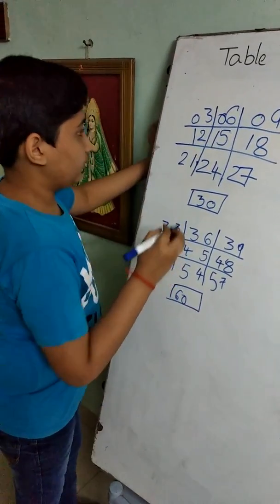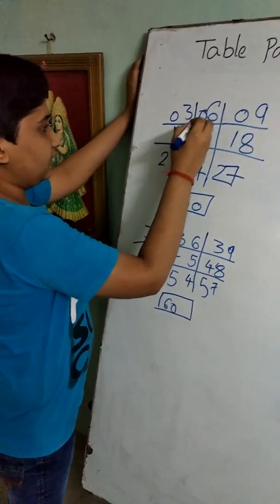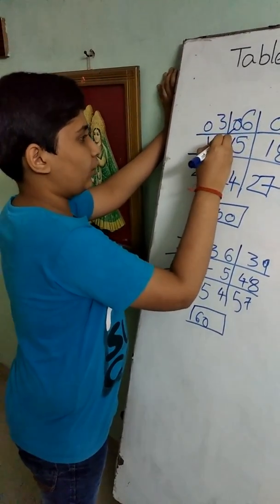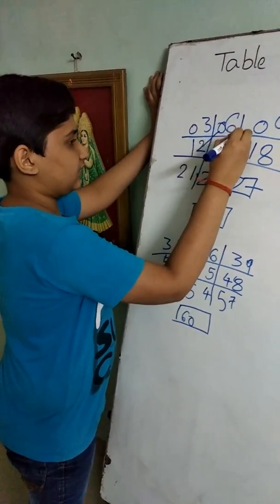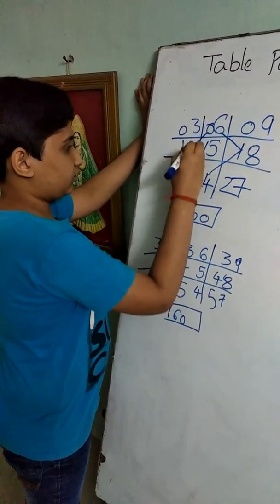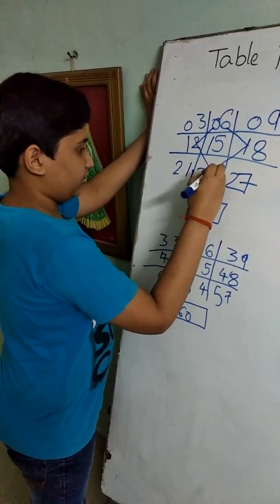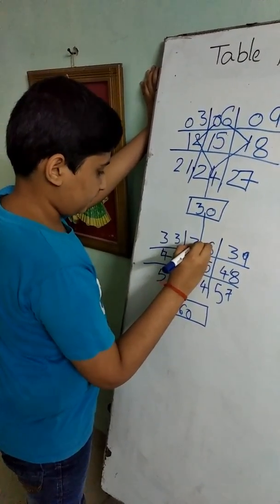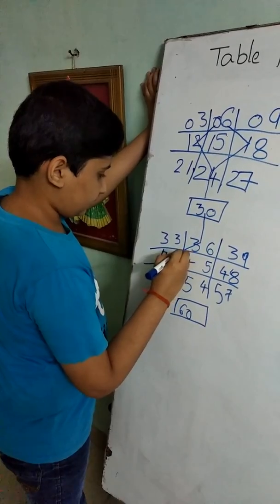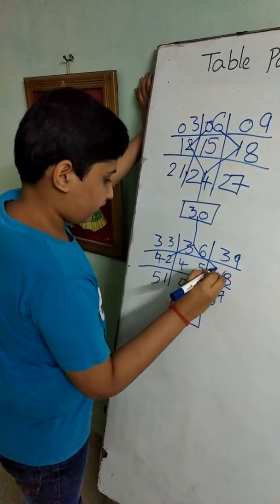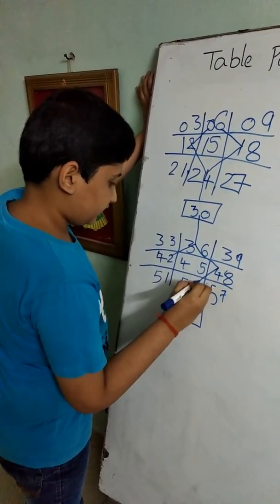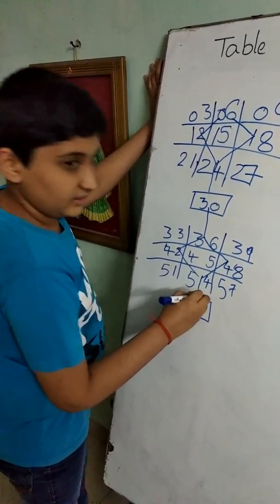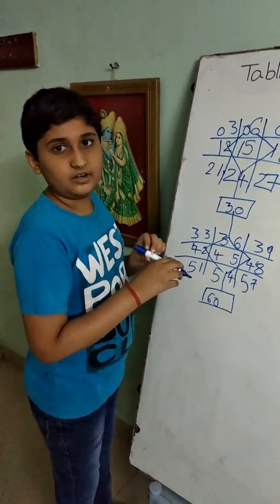And now we will take the 6th table. That is 6 ones are 6, 6 twos are 12, 6 threes are 18, 6 fours are 24, 6 fives are 30, 6 sixes are 36, 6 sevens are 42, 6 eights are 48, 6 nines are 54, 6 tens are 60.